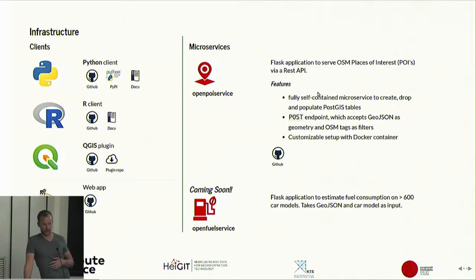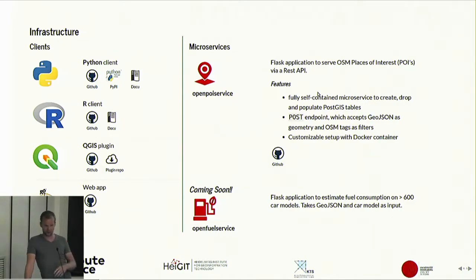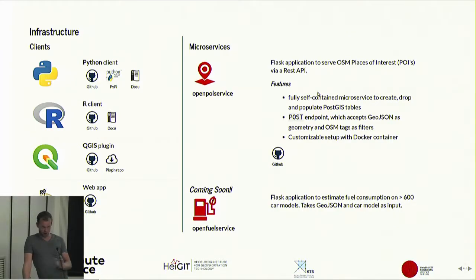The open POI service is also fully customizable in a Docker setup and automatically creates, drops, and populates PostGIS tables in the background. Coming soon is the Open Fuel Service — I'm really looking forward to that one. It will estimate your fuel consumption for up to 600 car models: you give it a GeoJSON and the car model and it estimates fuel consumption based on an open database. The values are well tested and not the official manufacturer figures, because those aren't really reliable.